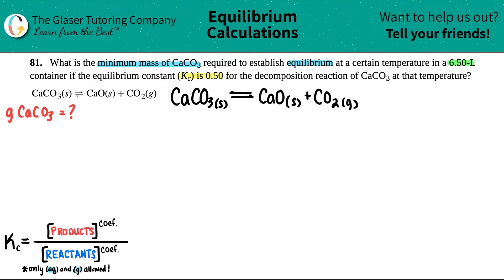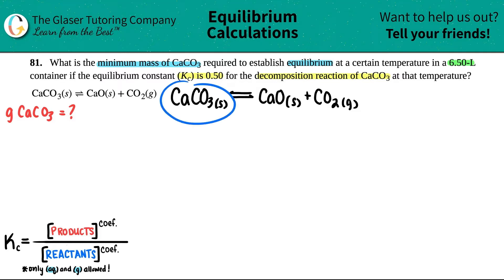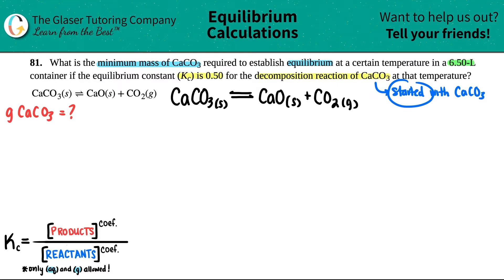They did say this is a decomposition reaction of CaCO3. If you're decomposing CaCO3, that means you started with all CaCO3 and it broke down. So in this decomposition reaction, you only started with CaCO3. A starting amount is an initial amount, and any time you're talking about initial amounts with equilibrium, you jump right to an ICE table.